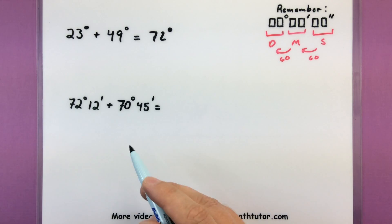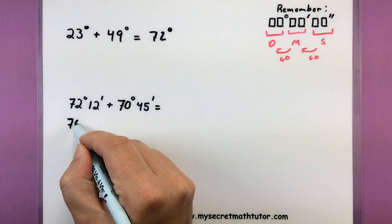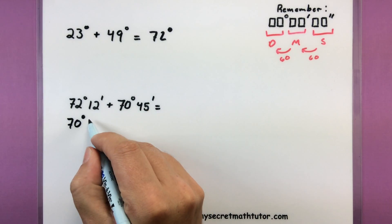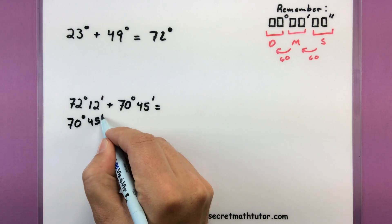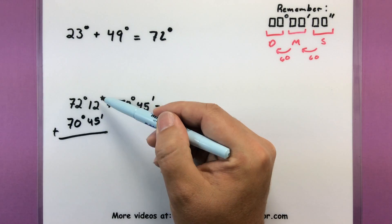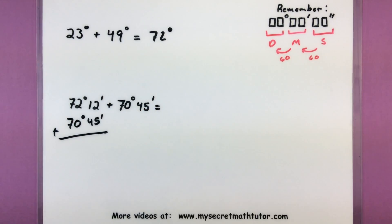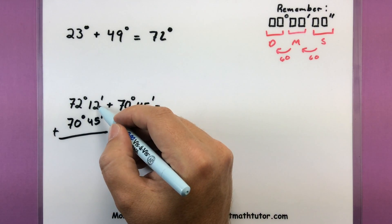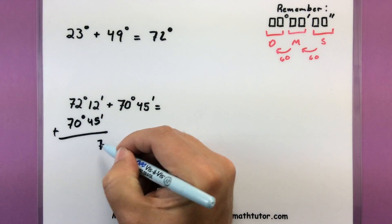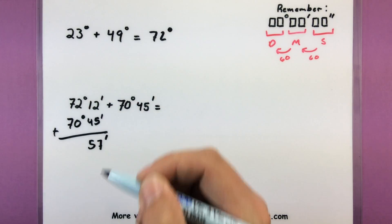Now another good thing that I like to do is actually write them one over another. So I'm really adding these two, but I'm going to write them like this: 72 degrees 12 minutes and 70 degrees 45 minutes. That way they're right on top of one another. I can see here are my minutes and here are my degrees. Starting over here with the minutes, I want to add them together. So 2 plus 5 is simply 7, 4 plus 1 is 5, and so it looks like I have 57 minutes.